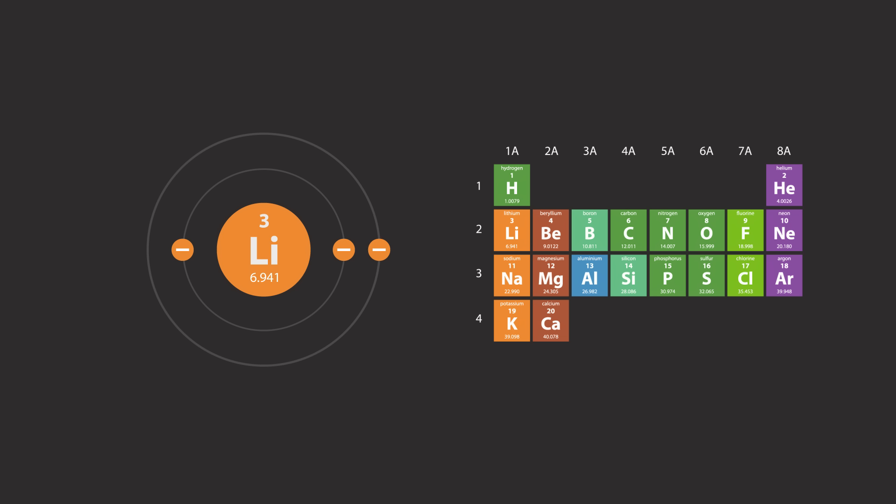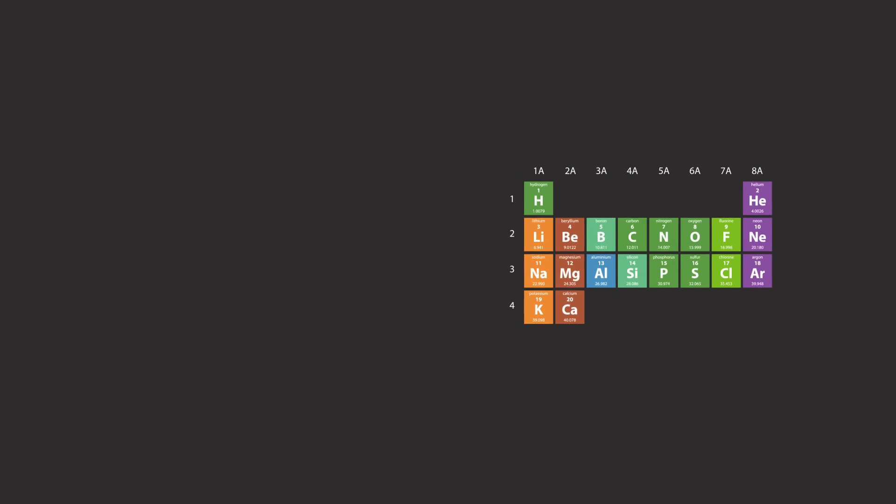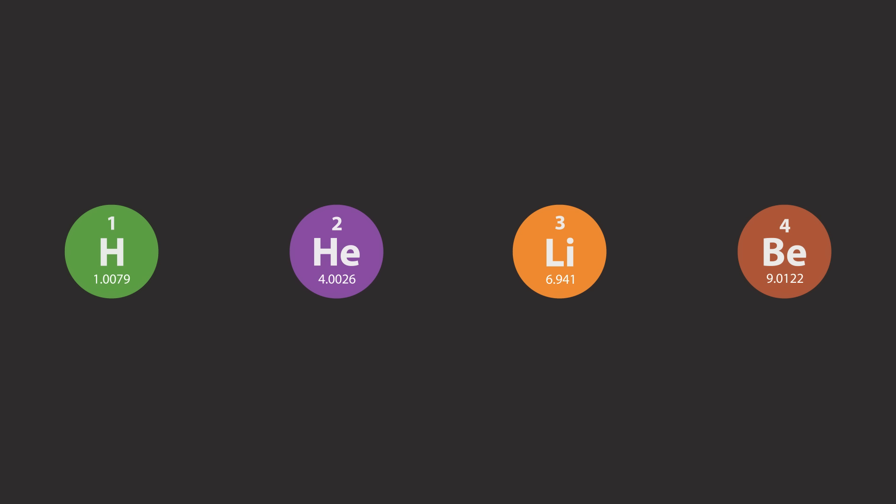For a beryllium atom, two electrons occupy the first electron shell, and the remaining two occupy the second shell. In written form, these configurations can be expressed as follows. The values in these expressions represent the number of electrons in each of their corresponding electron shells.